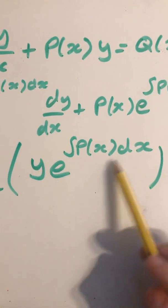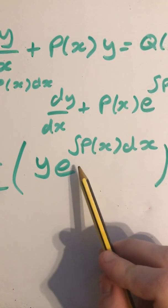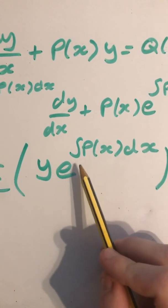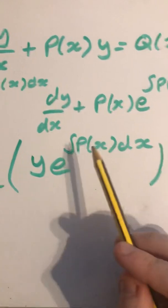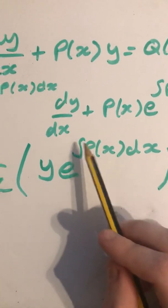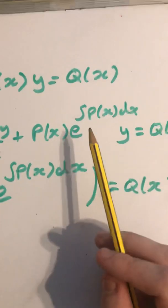And then we get plus y and the derivative of this. So to differentiate a function of e, you multiply by the derivative of the power and then just leave this the same. The derivative of the integral of p(x) dx is obviously p(x), so that comes down here.